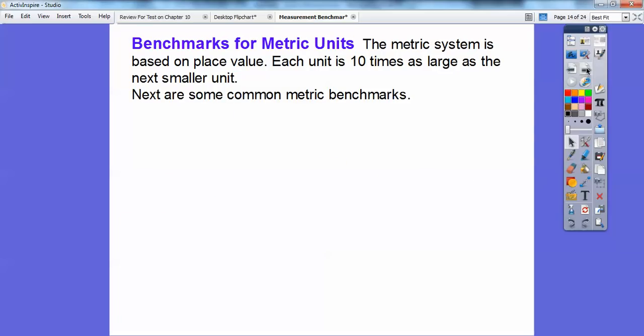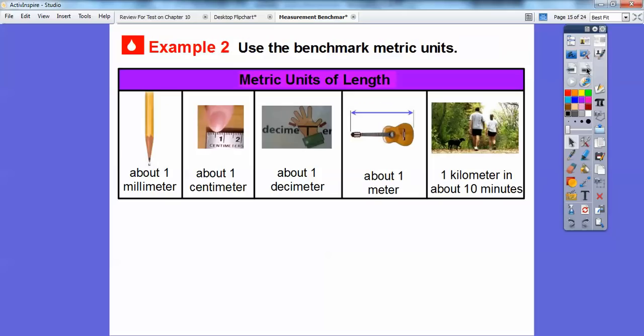So benchmarks for the metric units. The metric system is based on place value. Each unit is 10 times as large as the next smaller unit. So virtually the whole world uses the metric system, except for the United States. We have units that are in pounds and ounces, and they're just not the metric system. But everybody else in the world does metric systems. So next are some common metric benchmarks right here.